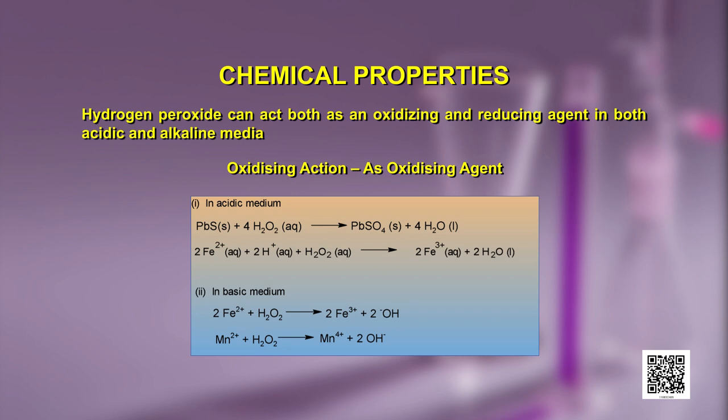Another example in basic medium where H₂O₂ acts as an oxidizing agent is that of Mn²⁺ ions, where Mn²⁺ ions get oxidized to Mn⁴⁺ ions. In this process, we again get hydroxide ions from the reduction of hydrogen peroxide.